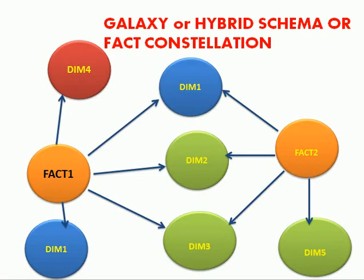Galaxy schema is an extension of your star schema and there are different names people will call it: galaxy schema, hybrid schema, or fact constellation. The constellation keyword came from galaxy because the related interconnected stars you can find in a galaxy are interconnected between those stars.